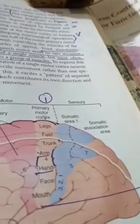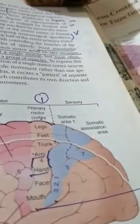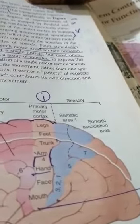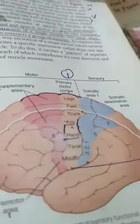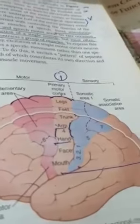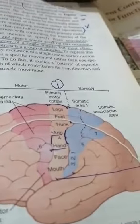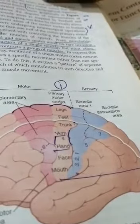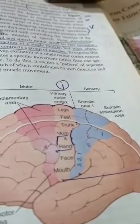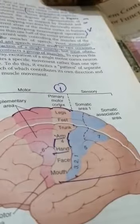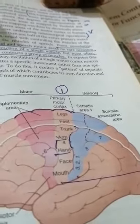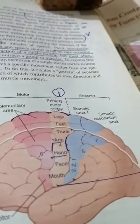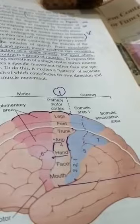In the posterior part of this area there are large giant pyramidal cells called Betz cells. When this area is stimulated, there are coordinated movements of parts on the contralateral side of the body. The whole body is represented in this area.